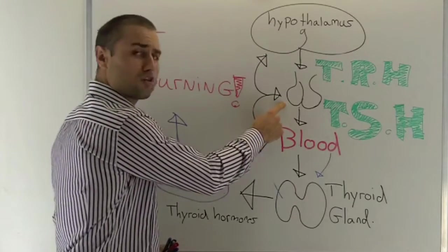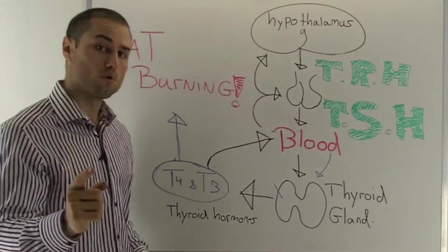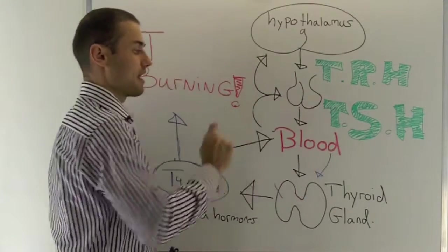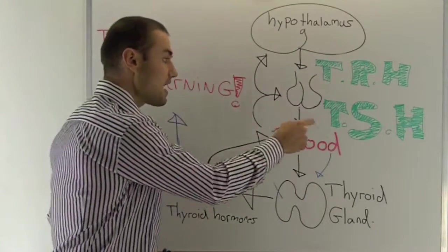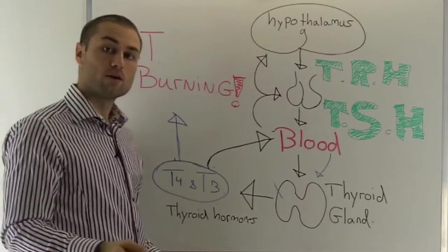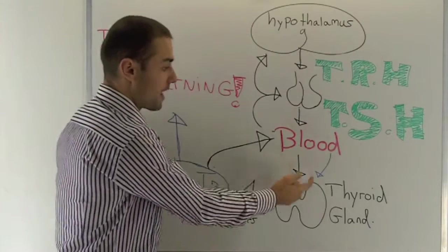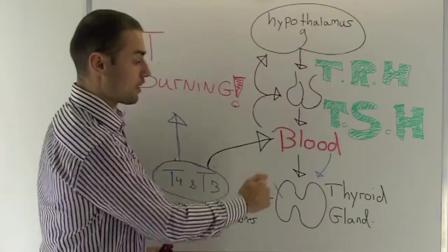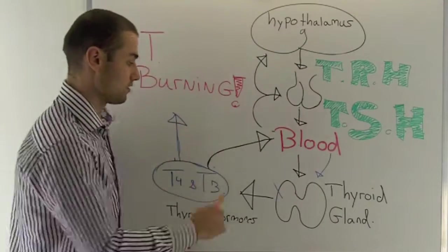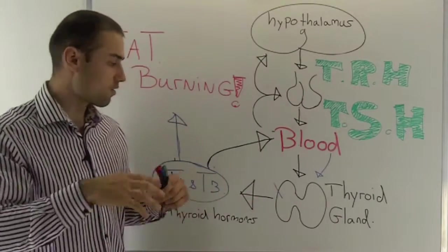So your pituitary gland now sends out another hormone called TSH. TSH now gets delivered within your bloodstream. Now from your blood, it goes to your thyroid gland. As you can see, it's shaped kind of like a butterfly or like an H.